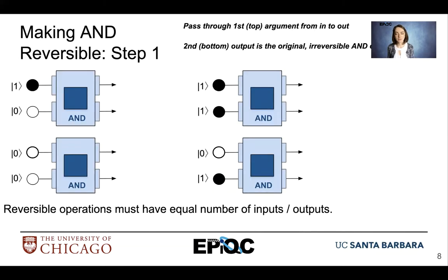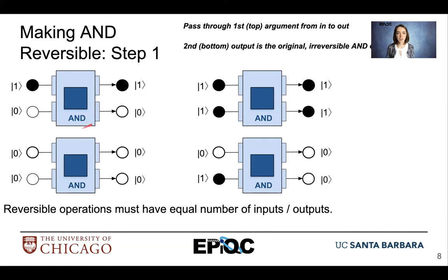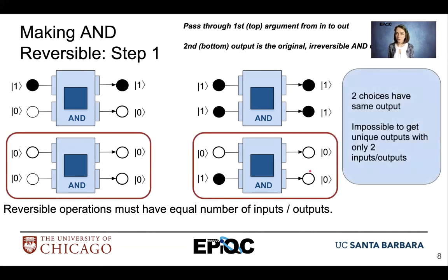Let's make the AND gate reversible. In step one, we need to make the number of inputs and outputs the same. First, we are going to pass the top argument from IN to OUT. Second, we're going to take the output of the original AND operation — white ball, white ball, black ball for the case where we have two inputs equal to ket 1, and then white ball. Unfortunately, this function is still not reversible. We have two choices that have the same output, and that violates our rules for a reversible function — each input must have a unique output. With only two inputs and two outputs, it's impossible for us to make the AND gate reversible.